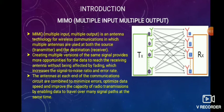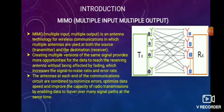Since my topic is channel capacity for MIMO, first of all, what do you mean by MIMO? MIMO is a multiple input and multiple output. It consists of an antenna technology for wireless communication in which multiple antennas are used at both the source and receiver. In MIMO, creating multiple versions of the same signal provides more opportunities for data to reach the receiving antenna without being affected by fading, which increases signal to noise ratio and error rate.